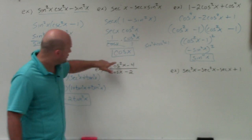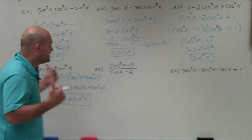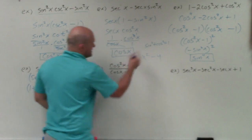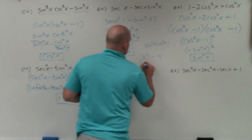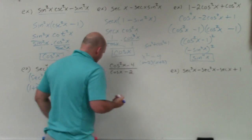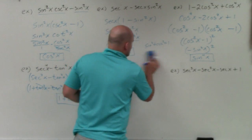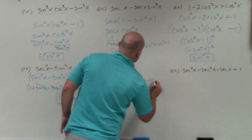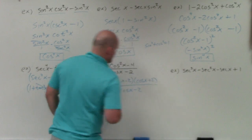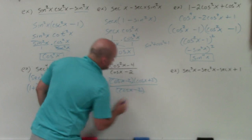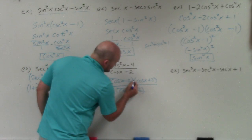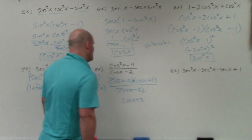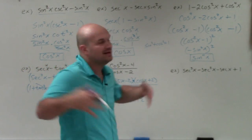The next example: I see cosine squared of x minus 4. Again, look to difference of two squares. Think of it as x squared minus 4, which factors as (x minus 2)(x plus 2). Doing the same with cosines, the numerator becomes (cosine of x minus 2)(cosine of x plus 2) divided by (cosine of x minus 2). Since cosine of x minus 2 appears in both numerator and denominator, those cancel, and I'm left with cosine of x plus 2.